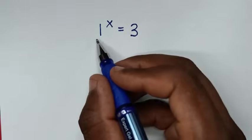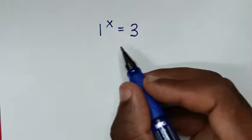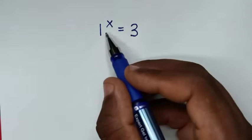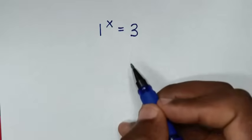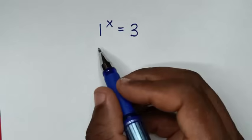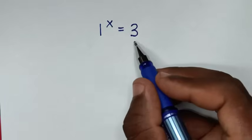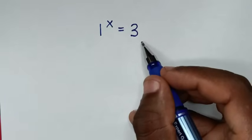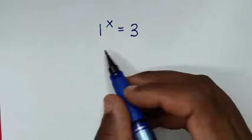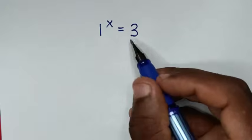Hello, you are welcome to solve this math problem, which is 1 to the power of x is equal to 3. To find the value of x from this equation, in the first step, we'll apply natural log on both sides.